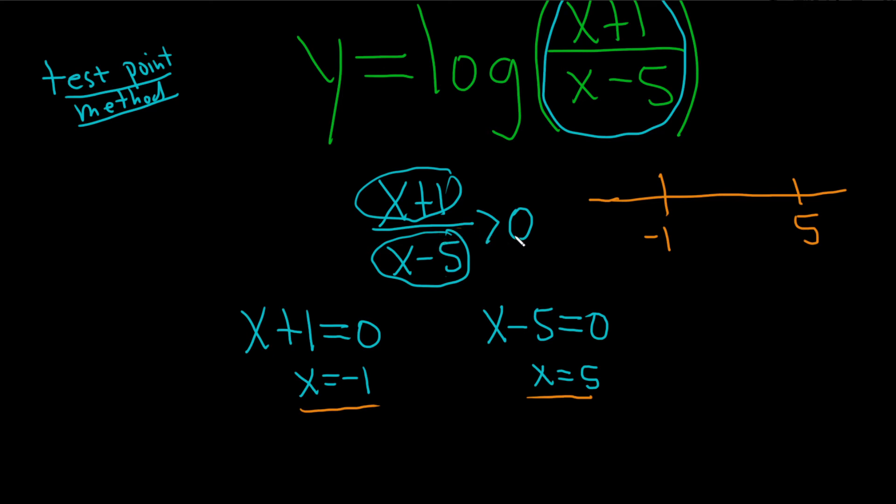I'm going to show you a trick. Let's pick the easiest number in the world besides these, 0. So let's check 0. We're picking a number from the middle region. If you plug it in, we have 0 plus 1 over 0 minus 5.